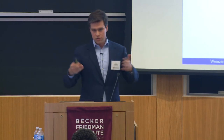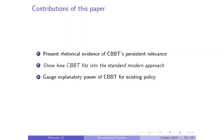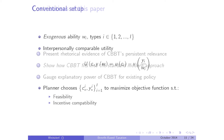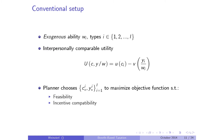Let me briefly show how you can put this idea into the modern optimal tax approach. Here's the standard setup: people differ in exogenous ability WI—think of it as the wage—and they have interpersonally comparable utility functions. You get utility from consumption and disutility from work effort, where Y over W is your work effort. The planner chooses some tax policy—a bundle of after-tax and pre-tax incomes—to maximize an objective function subject to feasibility and incentive compatibility.